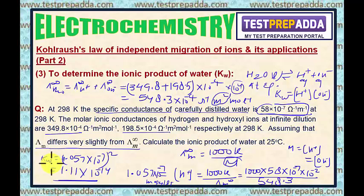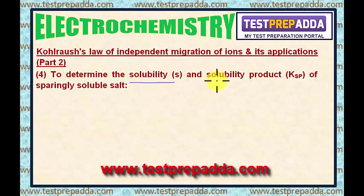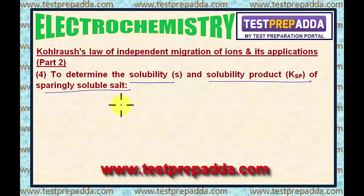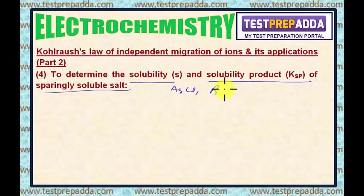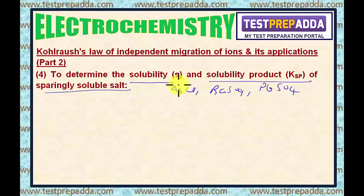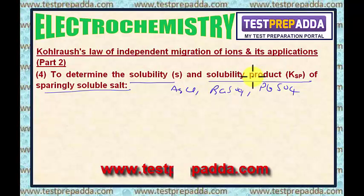Now I will take another application — to determine the solubility and solubility product of a sparingly soluble salt. There are a number of sparingly soluble salts like AgCl, BaSO₄, PbSO₄, etc., and their solubility cannot be found by chemical methods, but it is possible to determine by conductance measurement.